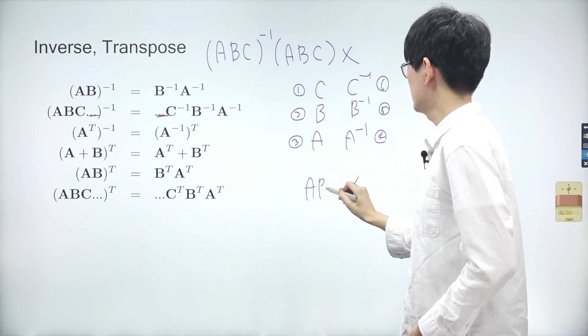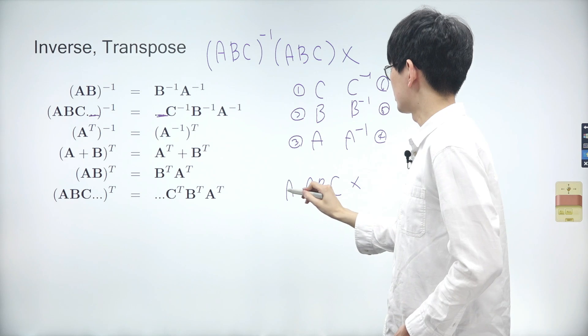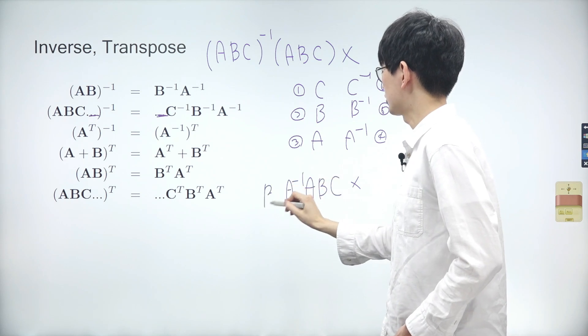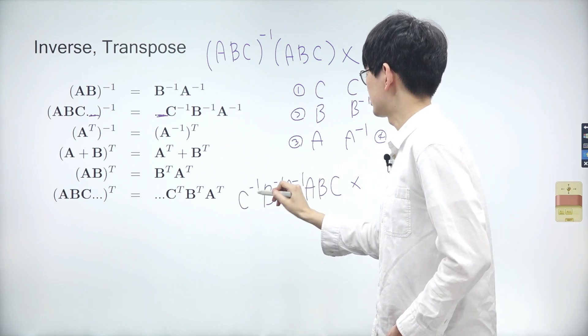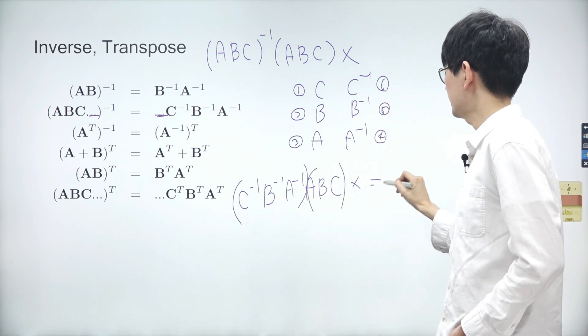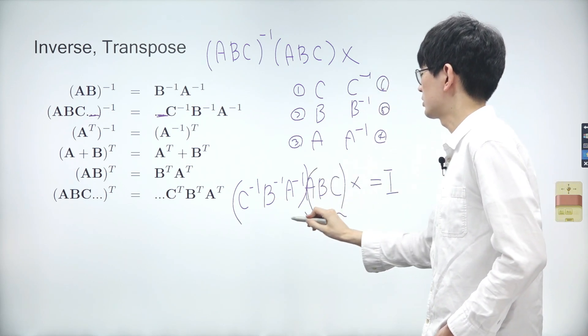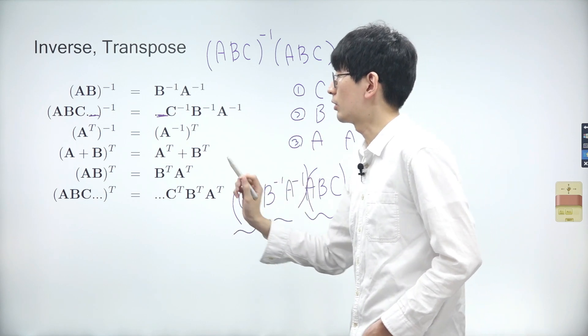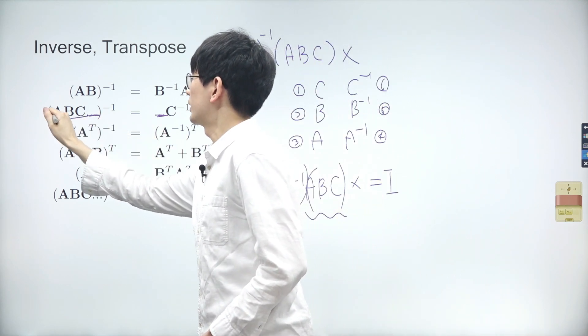The product of these two is an identity matrix. Therefore, the inverse of ABC is C inverse times B inverse times A inverse.